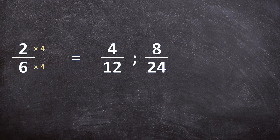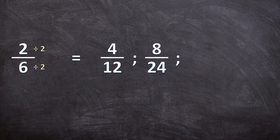Now let's look at the last equivalent fraction. When I identify a number that can go into both the numerator and the denominator, I can also divide them by that number to get an equivalent fraction. For example, we can divide the numerator and the denominator by two: two divided by two is one, over six divided by two is three. So if it's possible to divide the numerator and denominator by a number, you can also divide to get an equivalent fraction.